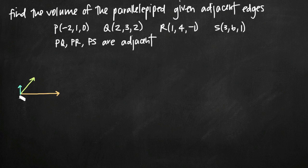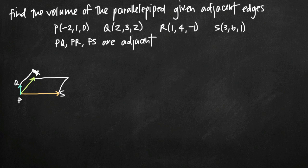We've been told that the point where they all connect is P, and then the endpoints can be Q, R, and S. If we fill in the other lines of this figure, you can see how this is a parallelepiped figure where we have six parallelograms for the sides of this three-dimensional figure. If we can model the line segments PQ, PR, and PS as vectors, then we can use the scalar triple product to find the volume of the parallelepiped.